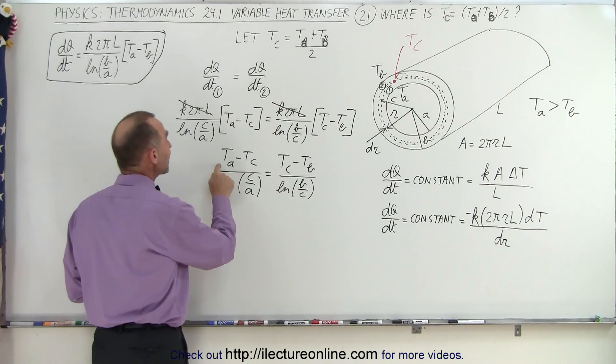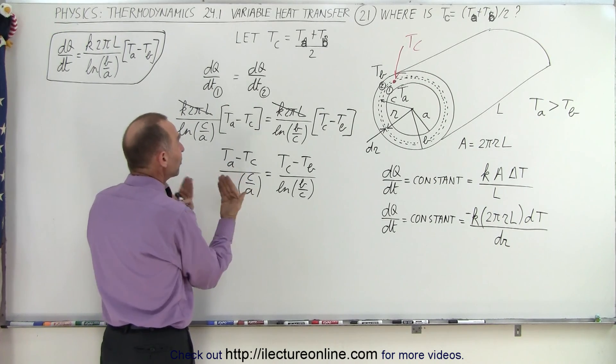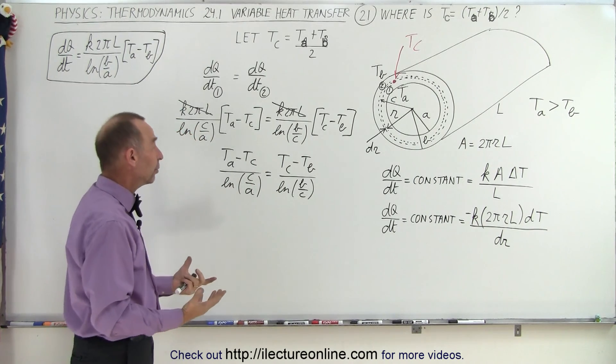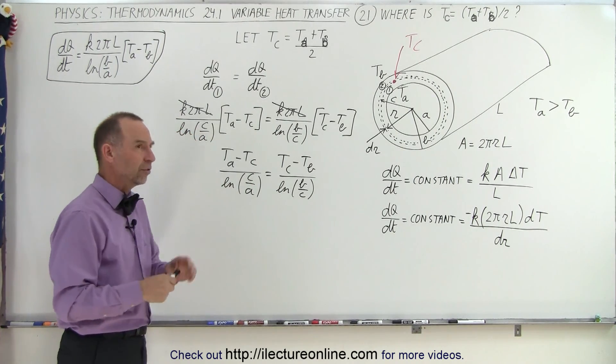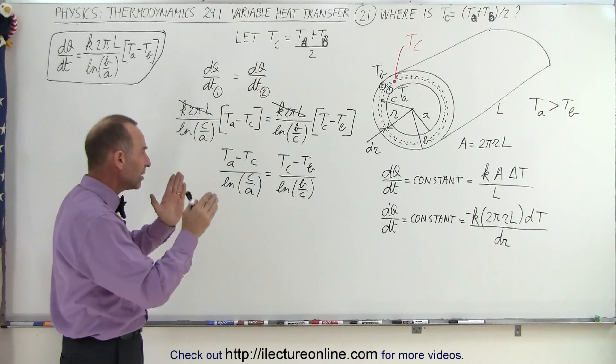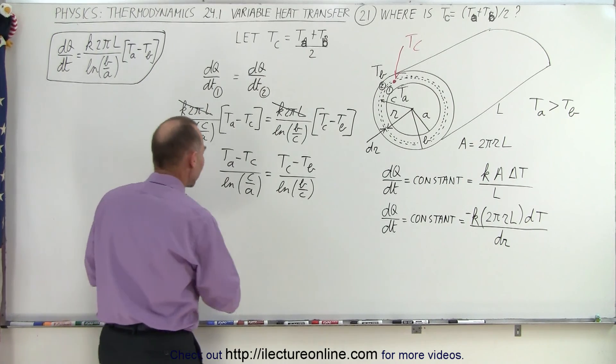realize that Ta minus Tc must be equal to Tc minus Tb. They have to be equal to each other, because Tc is right halfway between Ta and Tb. So because of that,